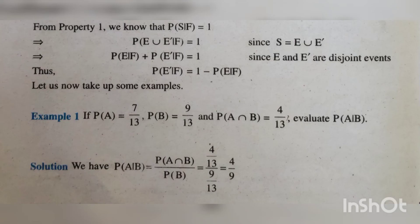Let us take one example. If P of A equals 7 by 13, P of B equals 9 by 13, and P of A intersection B equals 4 by 13, then evaluate P of A given B. Solution: P of A given B equals P of A intersection B divided by P of B, by the definition of conditional probability. The value of P of A intersection B is 4 by 13, and P of B is 9 by 13. The 13s get cancelled, and the answer is 4 by 9.